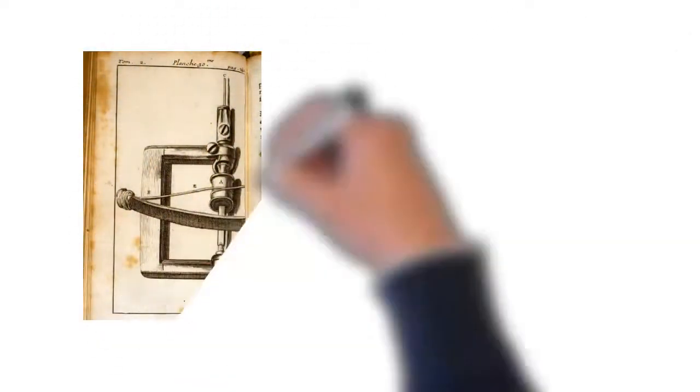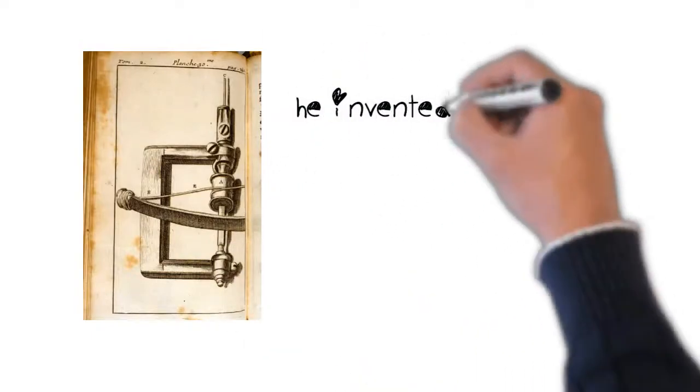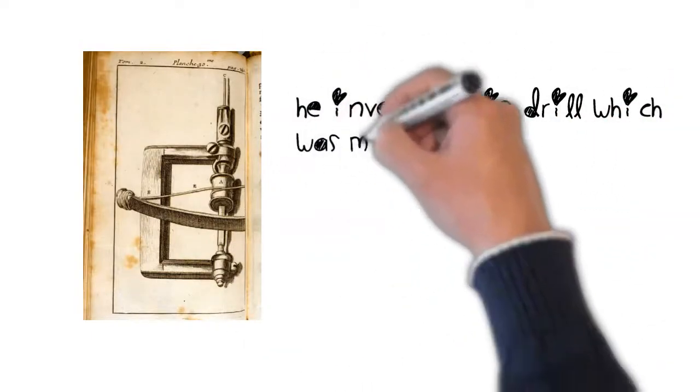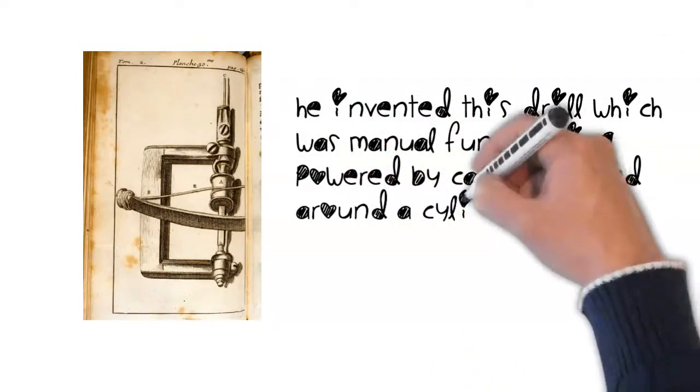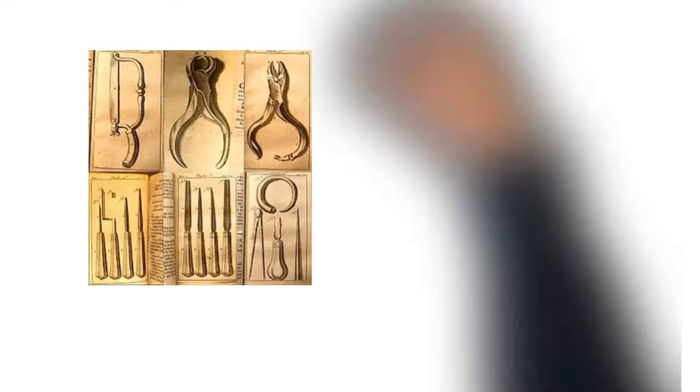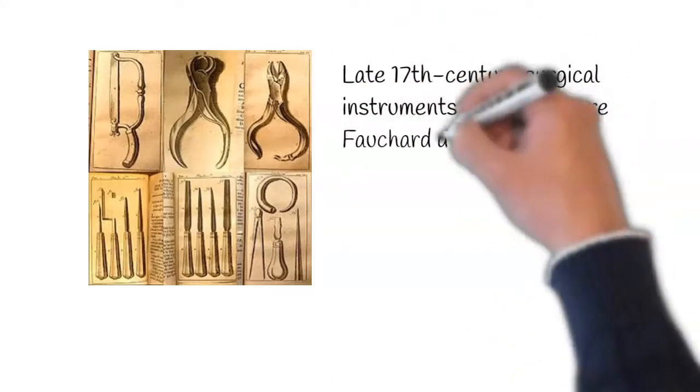He engraved many of his inventions of instruments made for oral surgery, some of them like obturators and the now famous dentist drill. Earlier when he invented this drill, it was manual functioning, powered by catgut twisted around a cylinder.